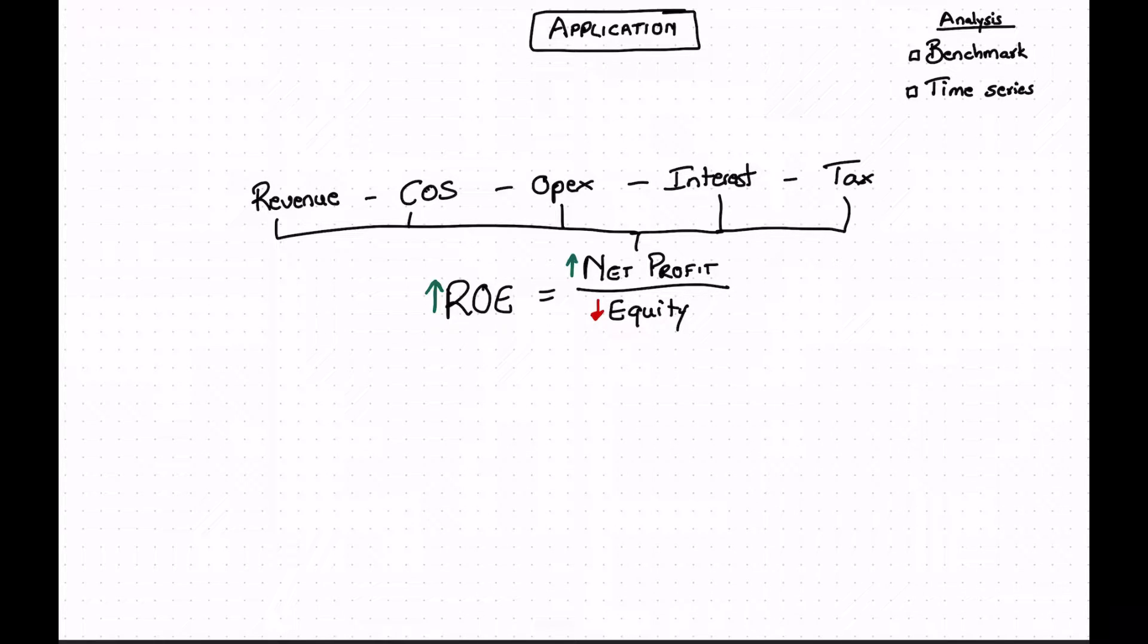So just looking at those components from your income statement, you can then look at the movement that they should be doing. So for net profit to increase, you expect that revenue should increase. Your cost of sales should decrease. Your operational expenses should decrease. Your interest you want it to decrease. And your tax should decrease. So as you're commenting on the increase in net profit, you now have five different levers to look at and to comment on.